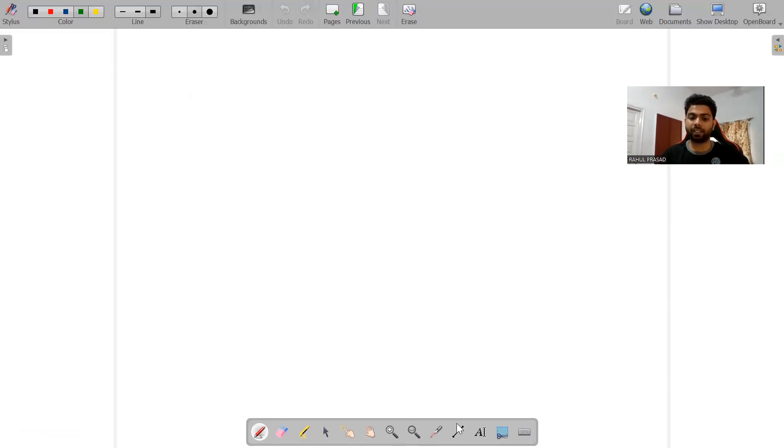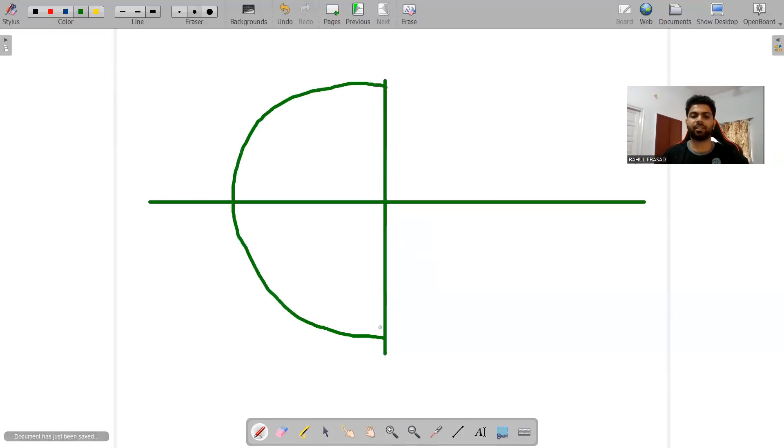Now for that, what we'll do, we will draw the vertical axis. This is basically my X axis. This is basically my Y axis. Now, what we will be doing is, let's say we'll create a circle. Let's say I'm creating a rough circle. Although it isn't perfect, that's fine.